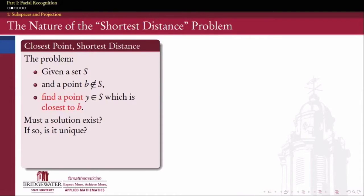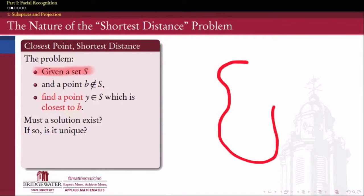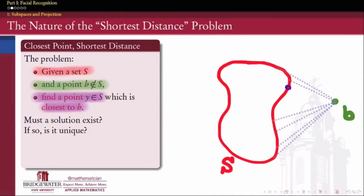What is the nature of the shortest distance problem? One way to formulate it mathematically is to say: given a set S and a point B which does not belong to that set, can we find a point inside of S which is the closest to B? And if we can find it, how do we find it? Like any good mathematical problem, we have to ask two really important questions. First of all, is it always possible to do this — will a solution always exist? And secondly, if that solution does exist, is it going to be unique? Or could there possibly be more than one point Y that achieves that shortest distance between the set S and the point B?